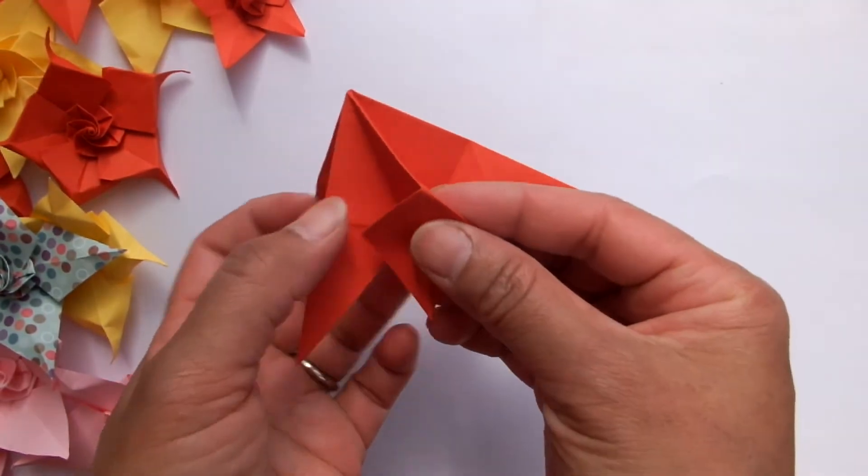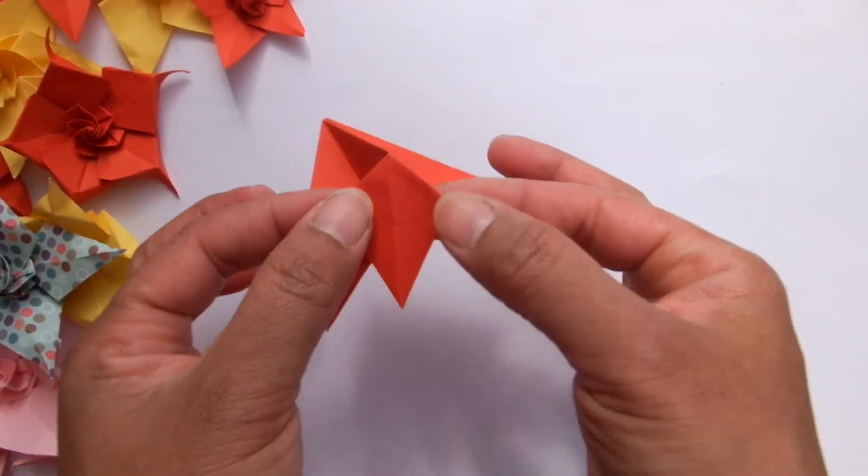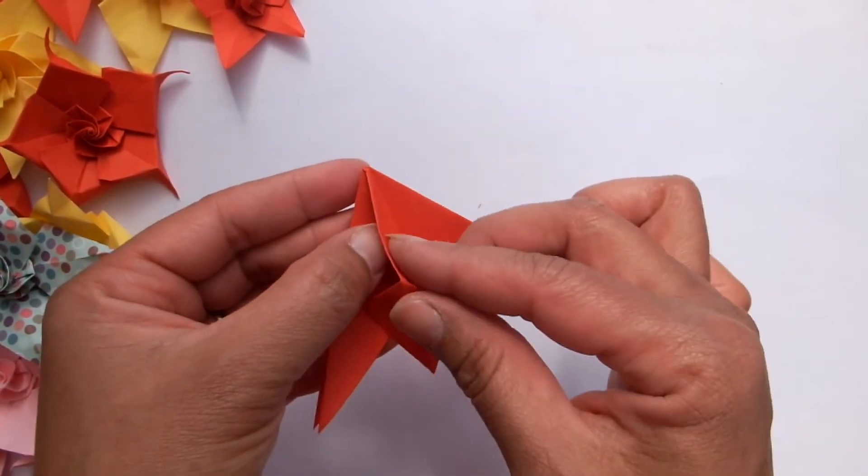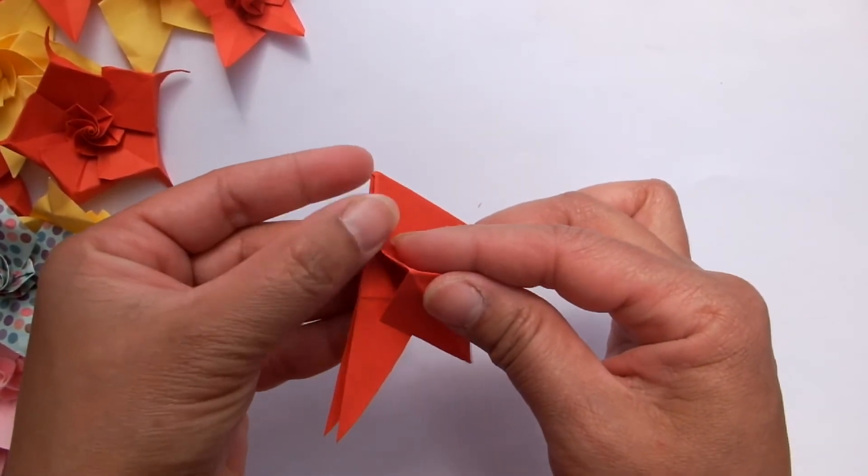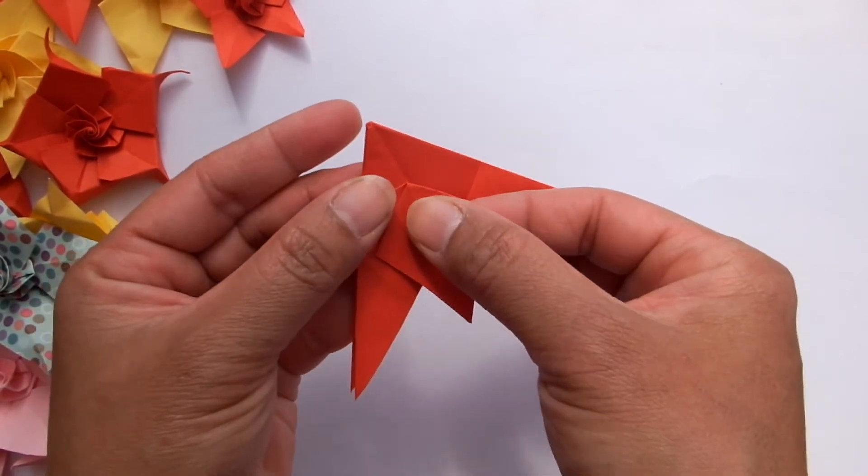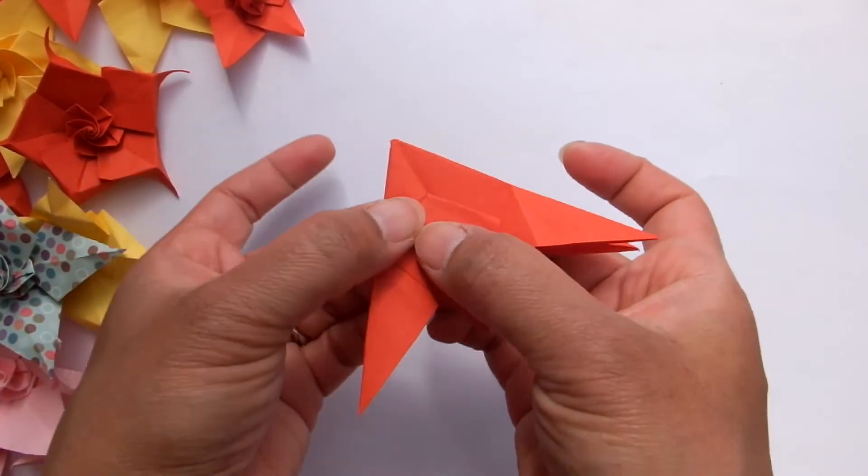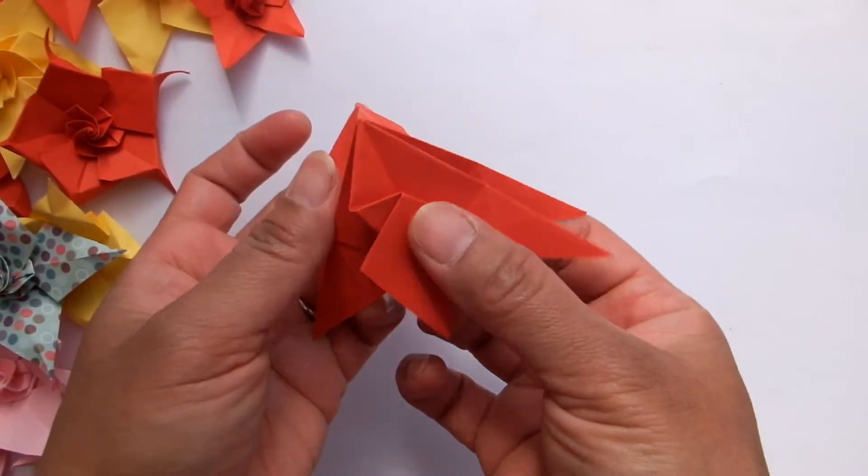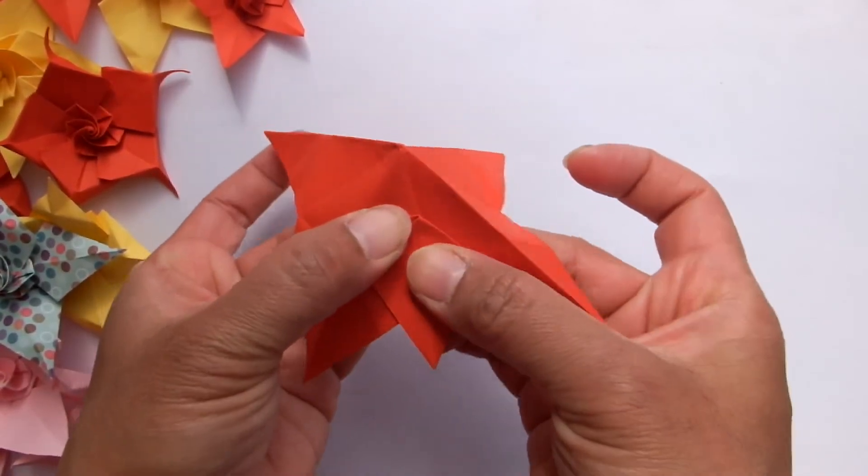And we want to bring this part to the left, only the half part. And the other half to the right. We press it. See? Like so.